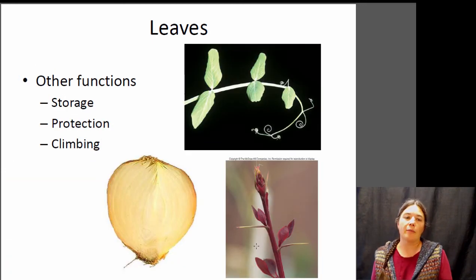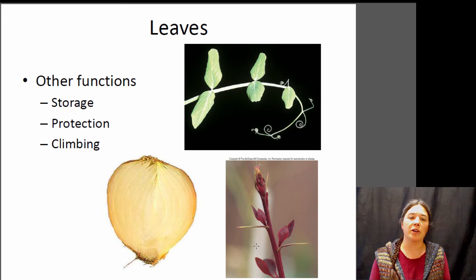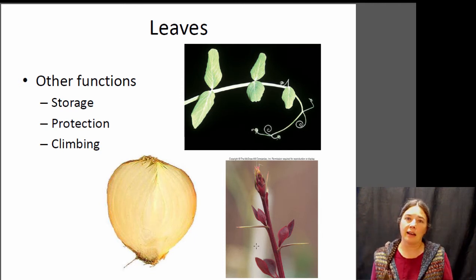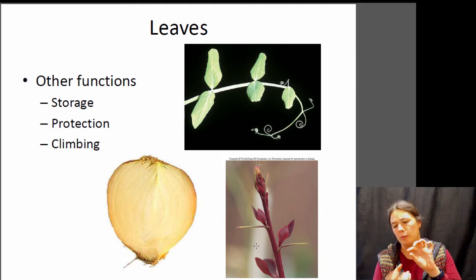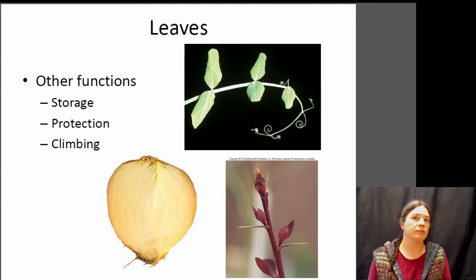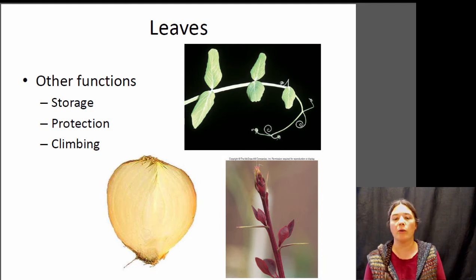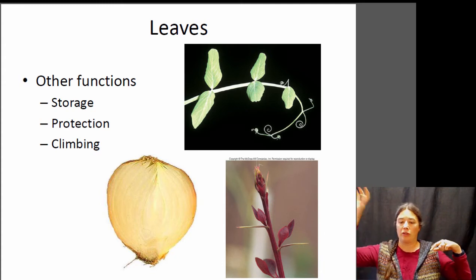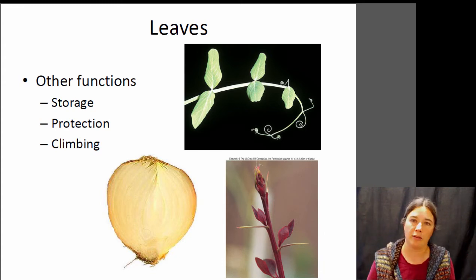Some leaves have other functions. There are leaves specialized for storage of nutrients — an onion is actually a bunch of leaves. If you let an onion go bad, green leaves shoot out the top, which tells you what it's made of. The bottom knobby part is roots, but the rest of the onion is leaves storing sugar for the plant's future use. There are also specialized leaves that are thorns, protecting the plant, and specialized leaves that are tendrils — curling around items and providing support for the plant.